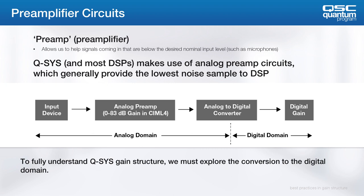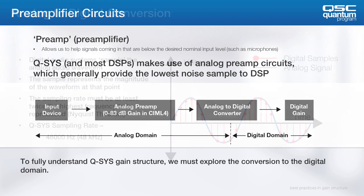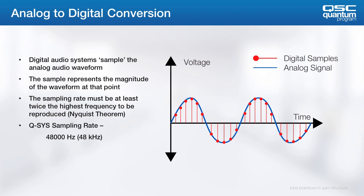An analog preamp typically provides the most control with the least noise. A-to-D conversion takes small samples of the analog audio waveform, where the signal enters the digital domain. These samples represent the magnitude of the waveform at that point, and a signal is typically sampled at a fixed rate. According to the Nyquist theorem, you must sample at twice the highest frequency that you plan to reproduce. As long as we're sampling at least double that 20K upper limit, we shouldn't experience aliasing. A Q-SYS sampling rate, for example, is 48K.